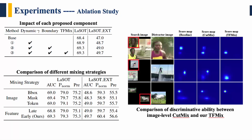Here are some ablation studies. First, we explore the impact of each proposed component, and we conclude that each component plays an important role in improving trackers. In addition, to demonstrate the effectiveness of our TF mix, we compare it with different mixing strategies, and our TF mix is the most robust and effective. The comparison figure shows the discriminative ability between an image-level method and our TF mix — when distractor tokens are mixed into search patches, our TF mix promotes the model to be more discriminative to distractors.